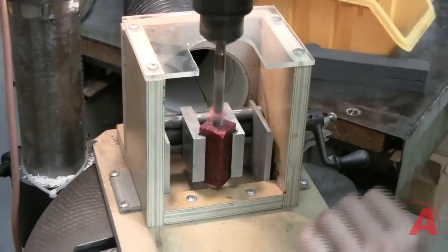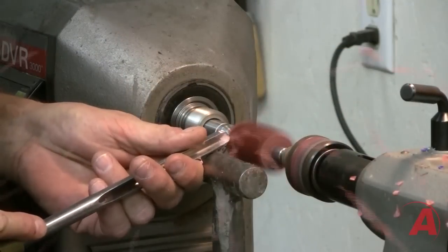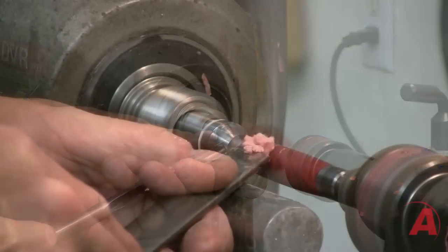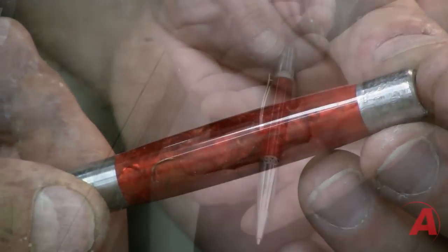Here you'll see a pen turning application where Alumalite Clear is polished to a high gloss. Alumalite Clear and Water Clear can be dyed using our liquid dyes while still maintaining translucency.